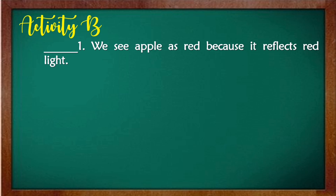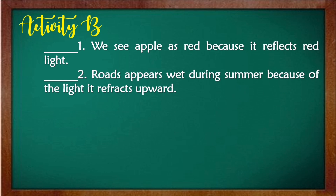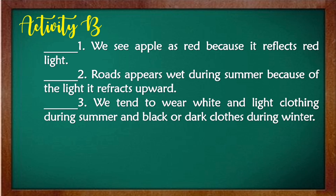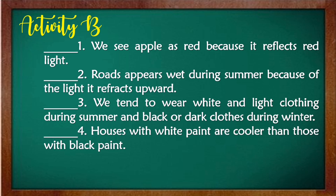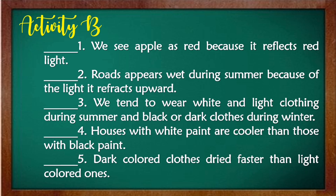Let's observe each picture and make some inferences. 1. We see an apple as red because it reflects red light. 2. Roads appear wet during summer because of the light reflected upward. 3. We tend to wear white and light clothing during summer and black or dark clothes during winter. 4. Houses with white paint are cooler than those with black paint. 5. Dark colored clothes dry faster than light colored ones.